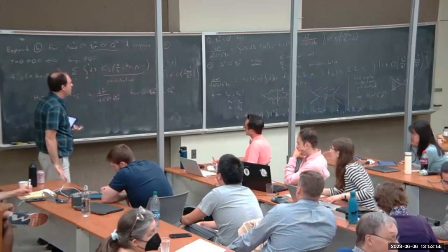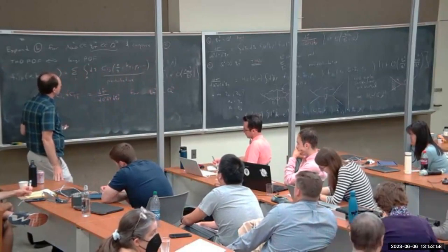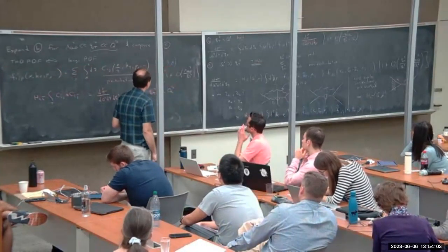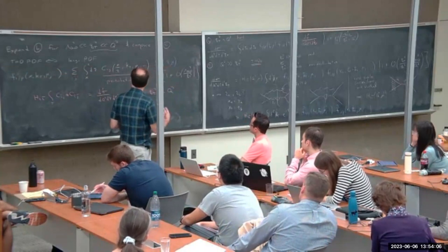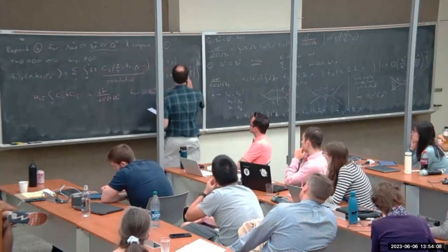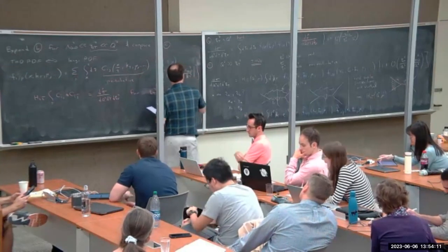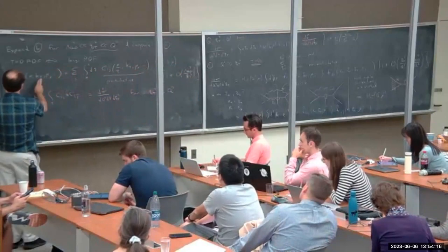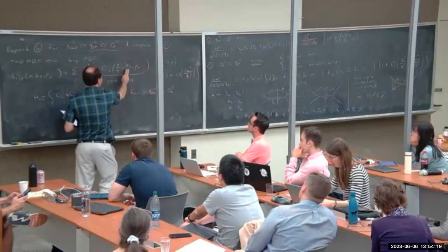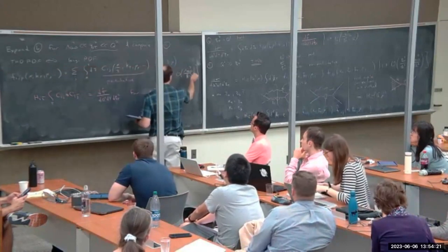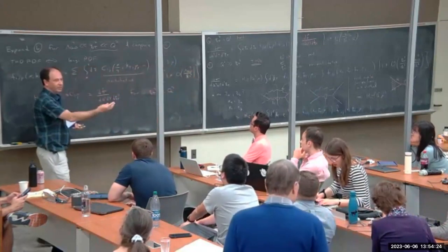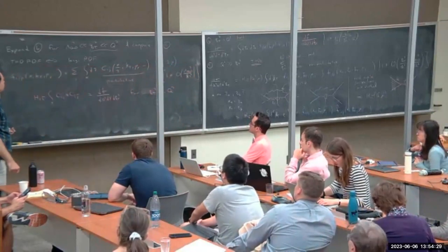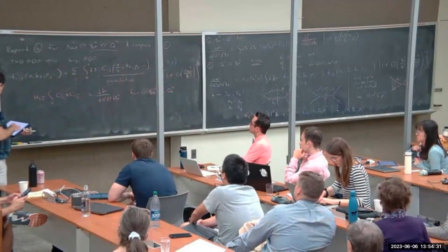A question about the last term: are we approximating Q_T squared equal to k_T squared? Yes, you can think of Q_T squared and k_T squared as essentially the same in this context. The same formula can be written down in b_T space: if this was b_T, this would be b_T, and the k_T in the denominator would be a b_T in the numerator — the same formula holds with a slightly different Fourier factor between these two versions.